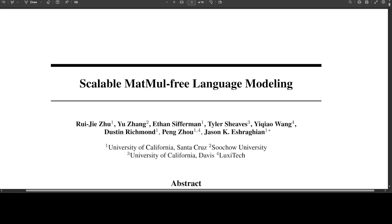The first strategy involves substituting MatMul with elementary operations. The second approach employs binary or ternary quantization, simplifying MatMul to operations where values are either flipped or zeroed out before accumulation. In this paper, these researchers have developed the first scalable MatMul-free language model by using additive operations in dense layers and element-wise products for self-attention-like functions.